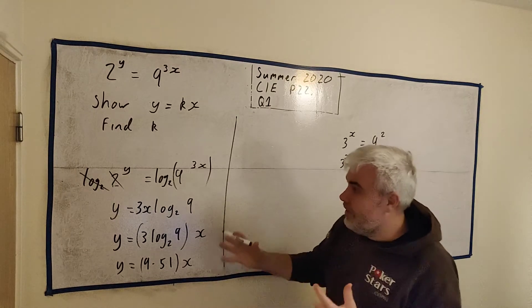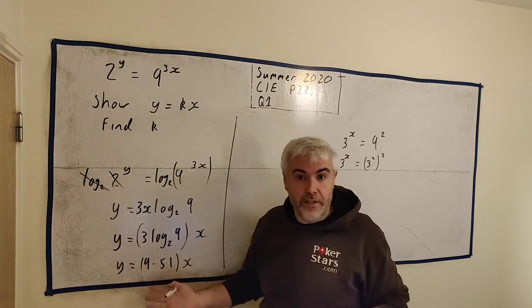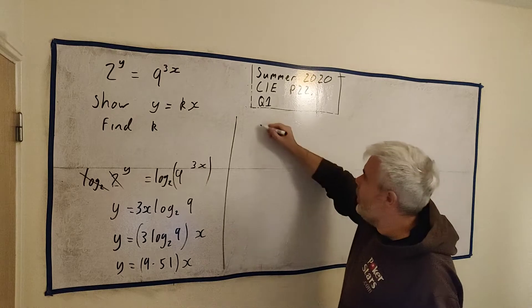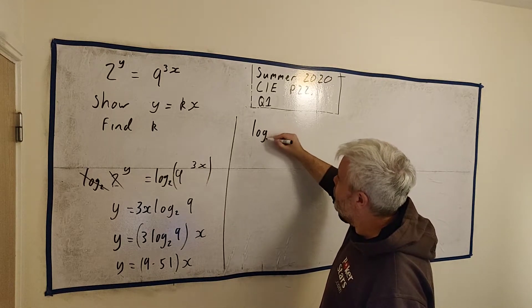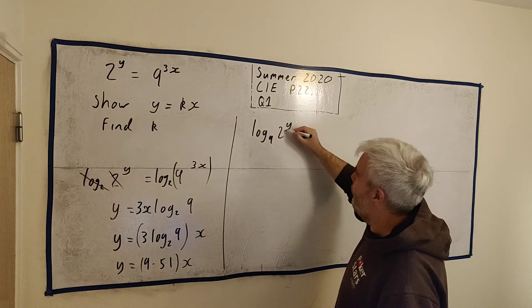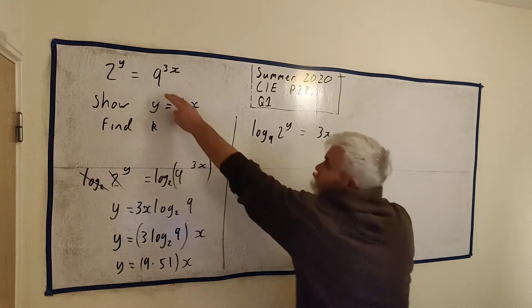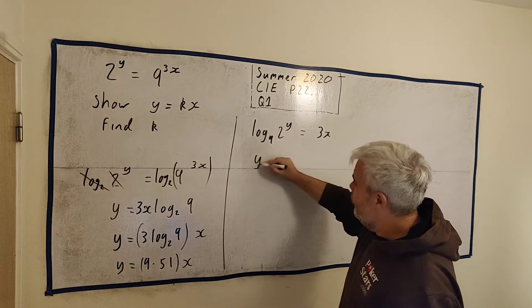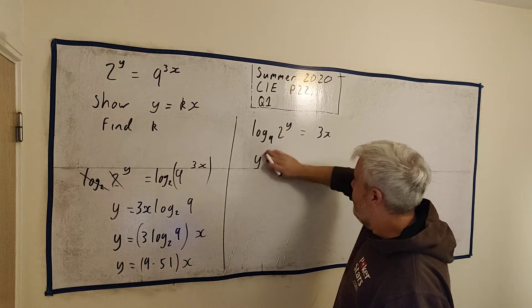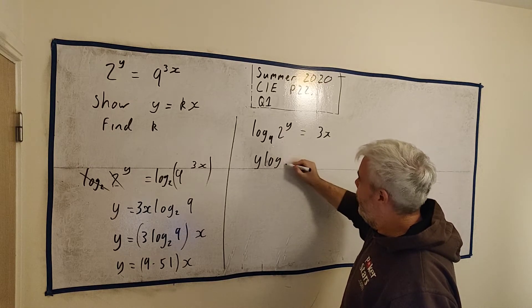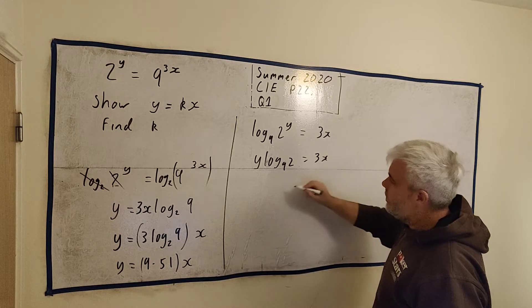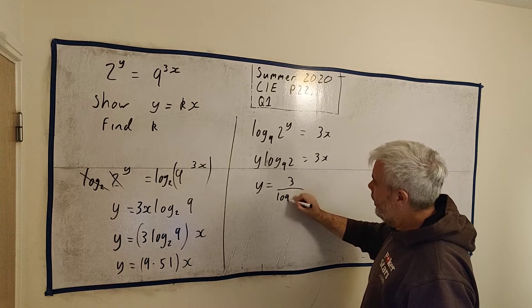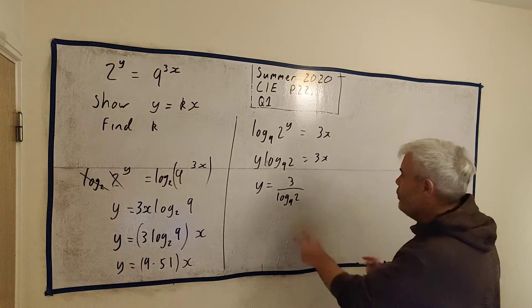Now I said I'd do the question a couple of different ways. Because that'd be one way to do it. It's not actually the way I did it. You could have used log to the base 9. So let's take log to the base 9 of both sides. We get log to the base 9 of 2 to the power of y is equal to 3x. Remember log to the base 9 just destroys that 9. The y comes out front. Log base 9 of 2 is equal to 3x. y is equal to 3 divided by log to the base 9 of 2.